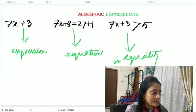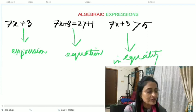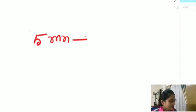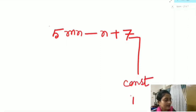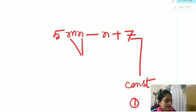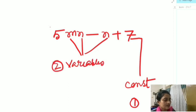Dear children, let's take an algebraic expression: 5mn minus n plus 7. This is an algebraic expression because it is a combination of constants and variables. Here you see 7 is a constant as it has a fixed numerical value, and m and n are called variables, as in their place you can take different numerical values.